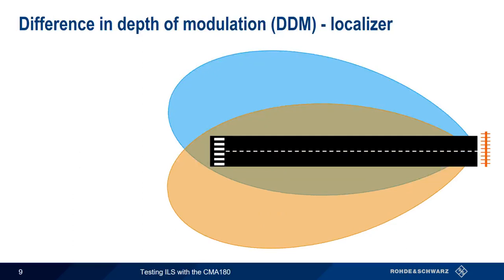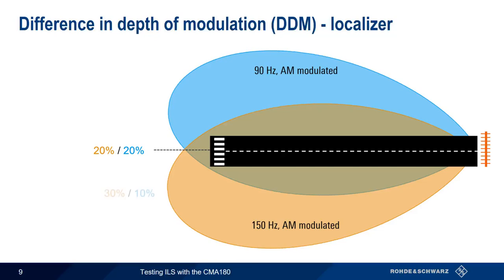Both lobes of the localizer are AM-modulated — the left lobe at 90 Hz and the right lobe at 150 Hz. The modulation depth of each lobe is different depending on position within the lobe. On the runway centerline, both lobes have the same AM modulation depth of 20%. As we move to the right of the centerline, the AM modulation depth of the 150 Hz lobe increases and the 90 Hz lobe decreases. For example, at one point the 150 Hz lobe increases to 30% and the 90 Hz lobe decreases to 10%. At the far right edge of the localizer pattern, the 150 Hz lobe is at 40% AM modulation depth, with zero modulation depth on the 90 Hz lobe.